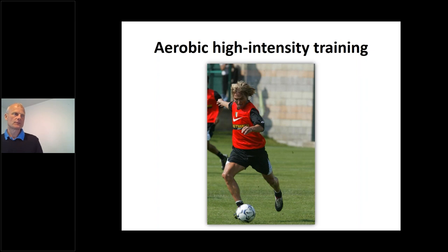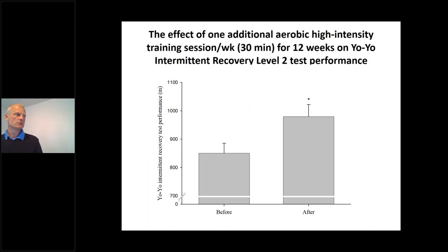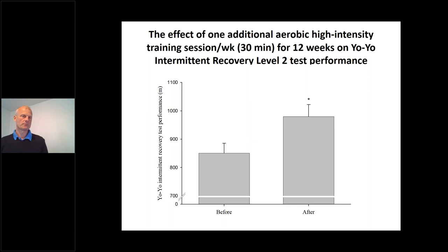To illustrate the importance of aerobic high-intensity training: one team added just 30 minutes of aerobic high-intensity work per week for 12 weeks. Comparing yo-yo test performance before and after, there was a marked increase — before, players averaged around 850 meters; after 12 weeks they were close to 1000 meters on average. It doesn't take much extra training for these players to improve their performance, and this clearly shows that aerobic high-intensity training is a very important factor.